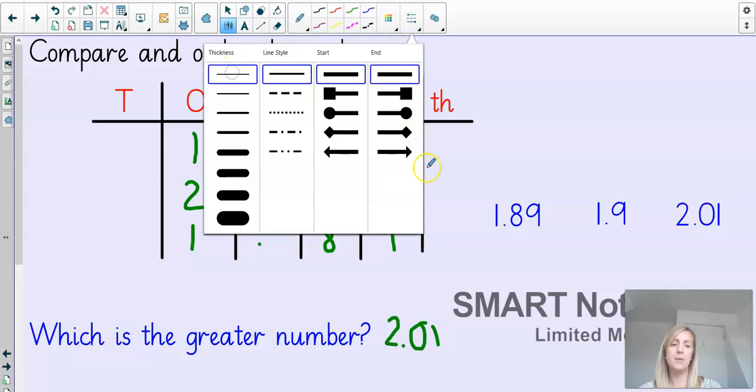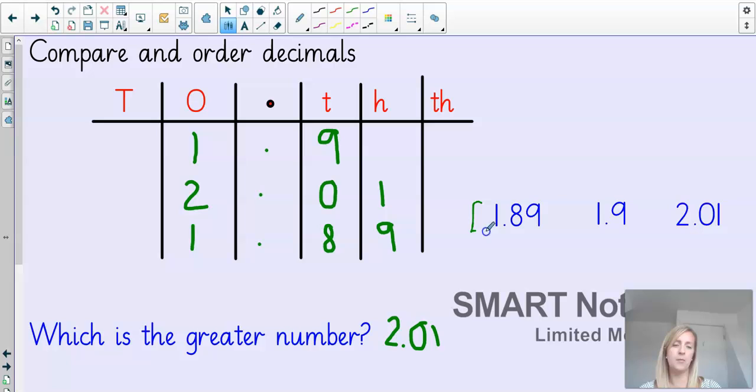And if we think of it like money, like I said last time, put my pound sign in front. Have to put the 0 in there. Now if we look at it like money, I've got £1.89, £1.90 and 2 pounds and 1 pence. So therefore, the greatest number must have been 2.01.